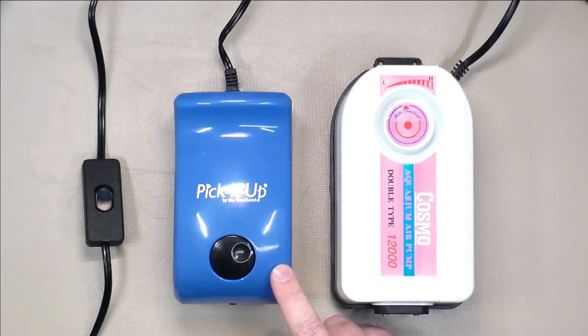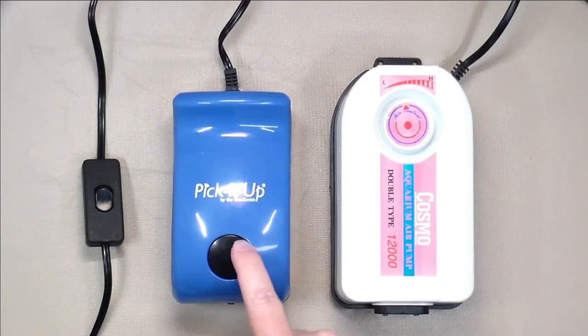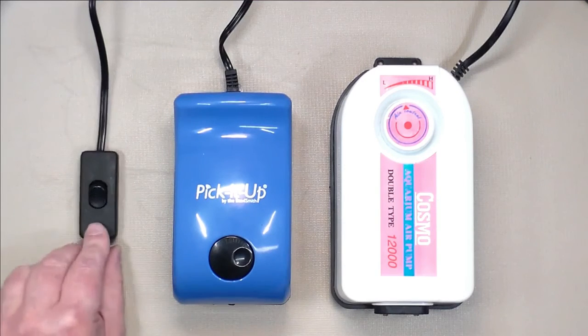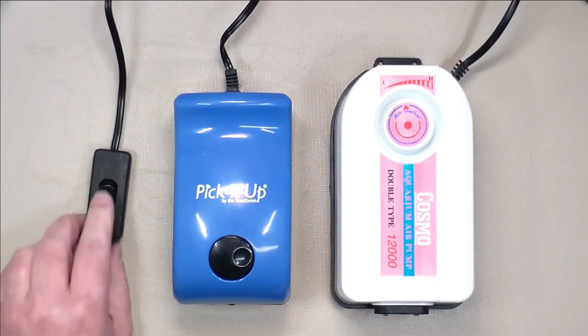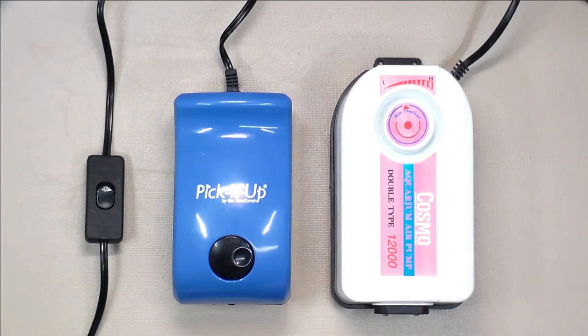Overall, it's got a knob on here as well to adjust the vacuum pressure. It has an independent power switch on the power cord that allows you to turn it on and off. So it's overall pretty good.